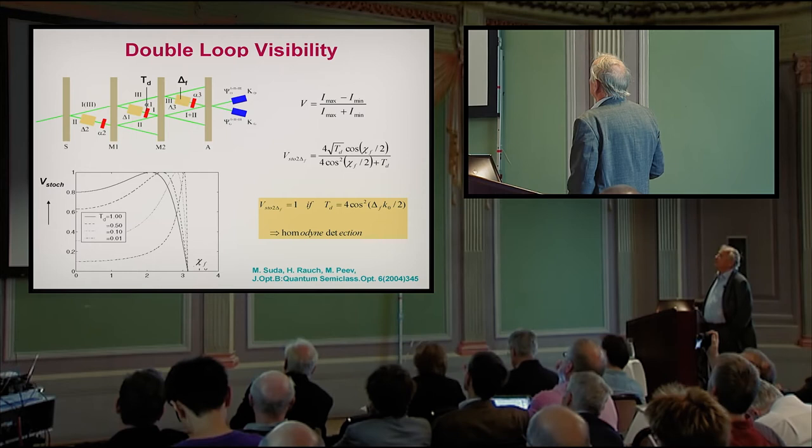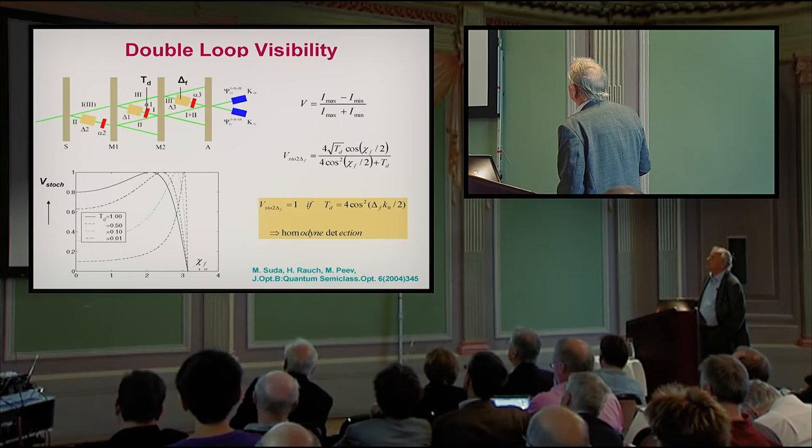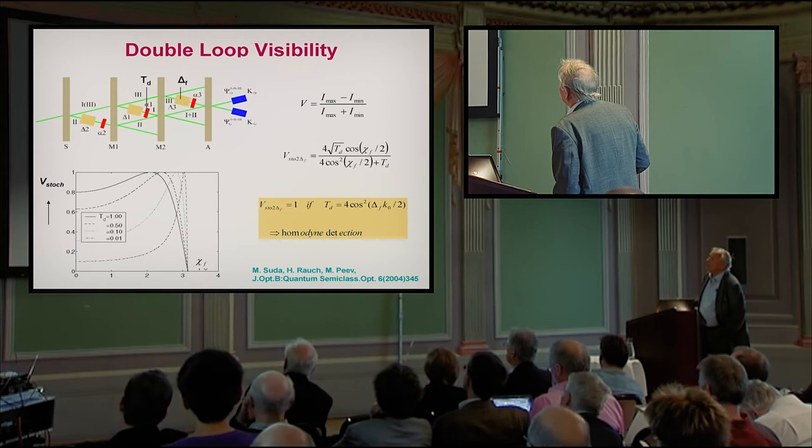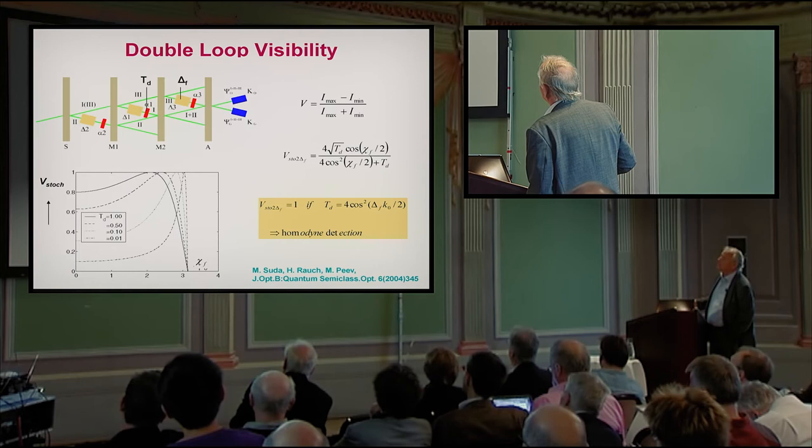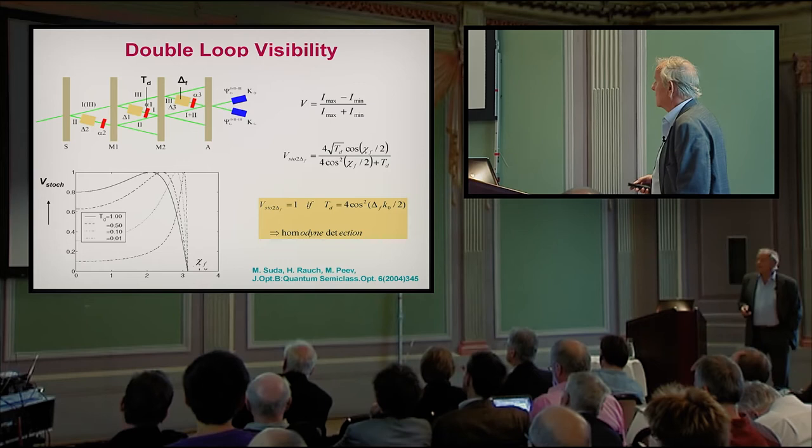But one can even increase this effect when you have, for instance, a double loop interferometer and only consider here. Here is a beam attenuator, only this one has to consider, and here is a phase shifter. Then you see here, when the transmission is one, you have this behavior, but also when you have here a strong beam attenuation, you can always reach nearly one hundred percent contrast.